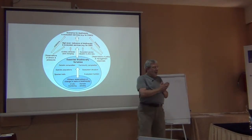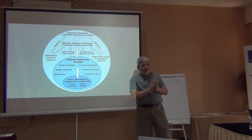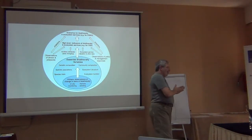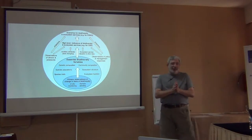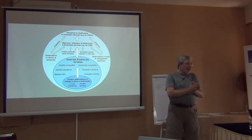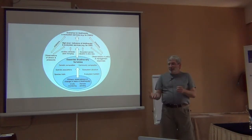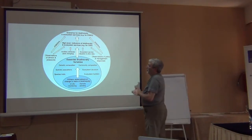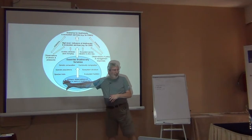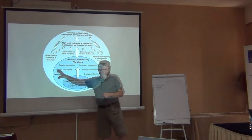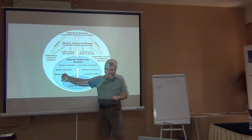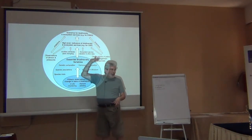Let's start talking about essential biodiversity variables. I've already given you an introduction to them. You remember this was intended as a means by which biodiversity could have a common currency, a common set of variables, so that data could be communicated, compared, and syntheses developed. This diagram shows primary observations being abstracted or synthesized slightly into these six sets of essential biodiversity variables, and then from there all sorts of synthetic things.